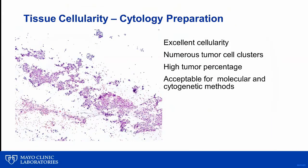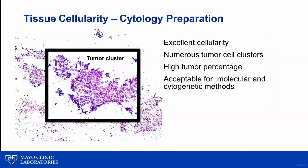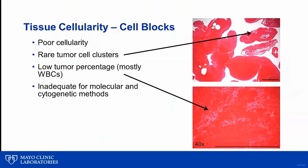Cytology preparations should be evaluated for the same metrics. This particular smear has excellent cellularity and numerous tumor cell clusters resulting in a high percentage of tumor nuclei, and this would be acceptable for most methods. In comparison, this cell block has very poor cellularity — the bulk of what we are seeing is simply red blood cells, and of the nucleated cells present, the vast majority are white blood cells with only very rare tumor cells. So not only do you have low cellularity overall, but also a low tumor percent, making this specimen inadequate for molecular and cytogenetic methods.